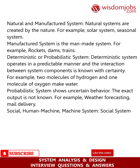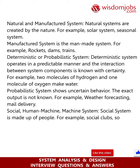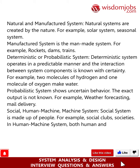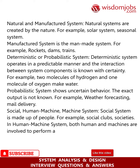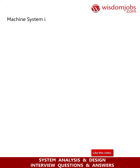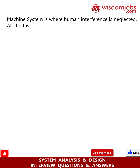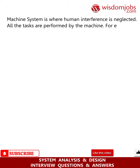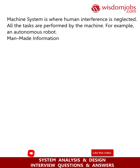A probabilistic system shows uncertain behavior; the exact output is not known. For example, weather forecasting and mail delivery. Social, human-machine, and machine systems. A social system is made up of people, for example social clubs and societies. In a human-machine system, both humans and machines are involved to perform a particular task, for example computer programming. A machine system is where human interference is neglected and all tasks are performed by the machine, for example an autonomous robot.